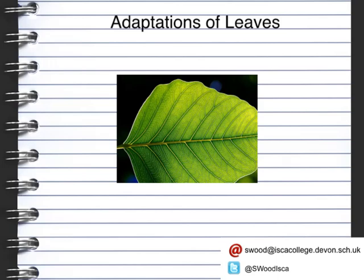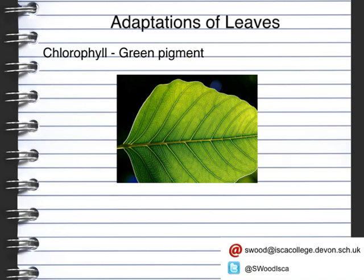We're going to look at the leaf itself and how it has adapted to be able to do its job. The first thing is the colour of the leaf. The leaf contains something called chlorophyll, which is the green pigment. The green pigment is not normally found elsewhere on the plant except in the leaf, and this is to aid photosynthesis and to allow photosynthesis to actually happen.